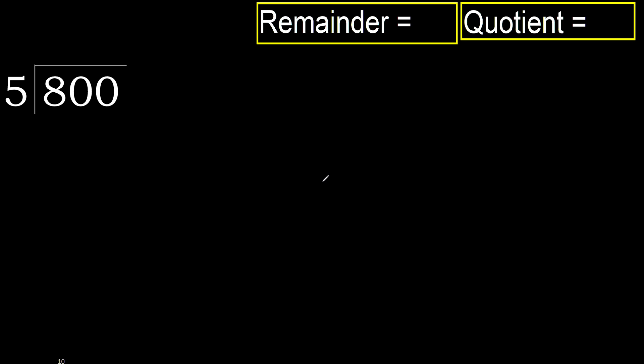800 divided by 5. Starting with 8 — 8 is not less, therefore we work with 8. 5 multiplied by which number is nearest to 8 but not greater?